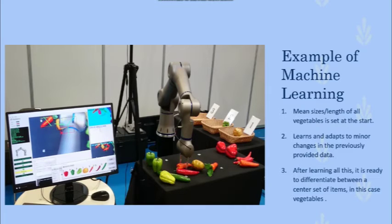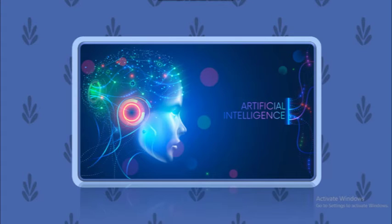Here is a mechanical arm which is undergoing machine learning. Firstly, it learns how each part of its body can move and bend separately. Next, it learns to hold specific objects according to their dimensions and figure out which object is which. And after figuring out what item it is carrying, it will move it to a separate location accordingly.